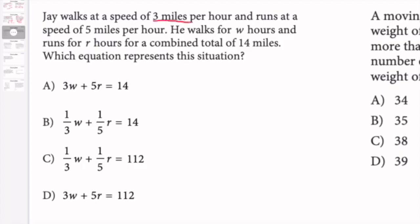Speed of 3 miles per hour and runs at a speed of 5 miles per hour. So I have my walking, which is my variable 1, and my running, which is my variable 2.